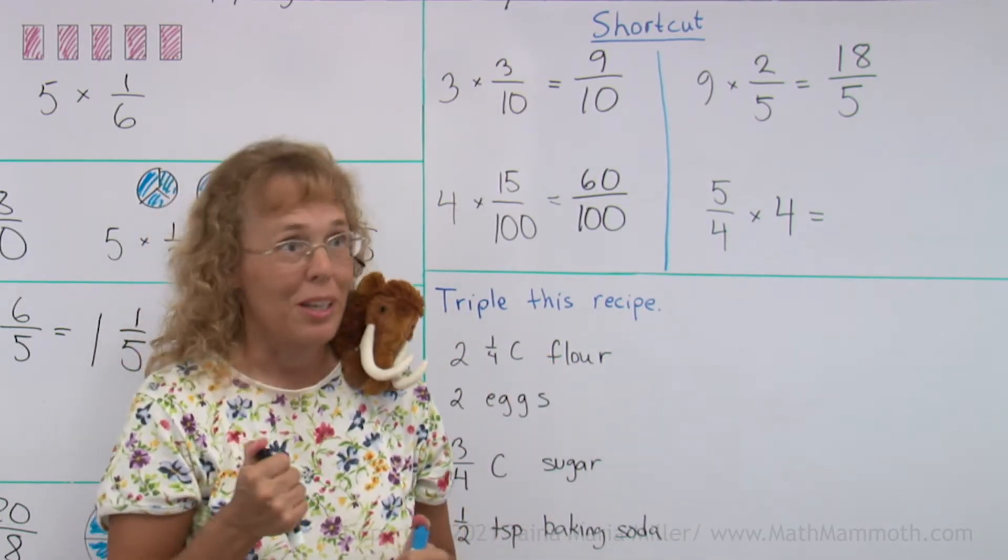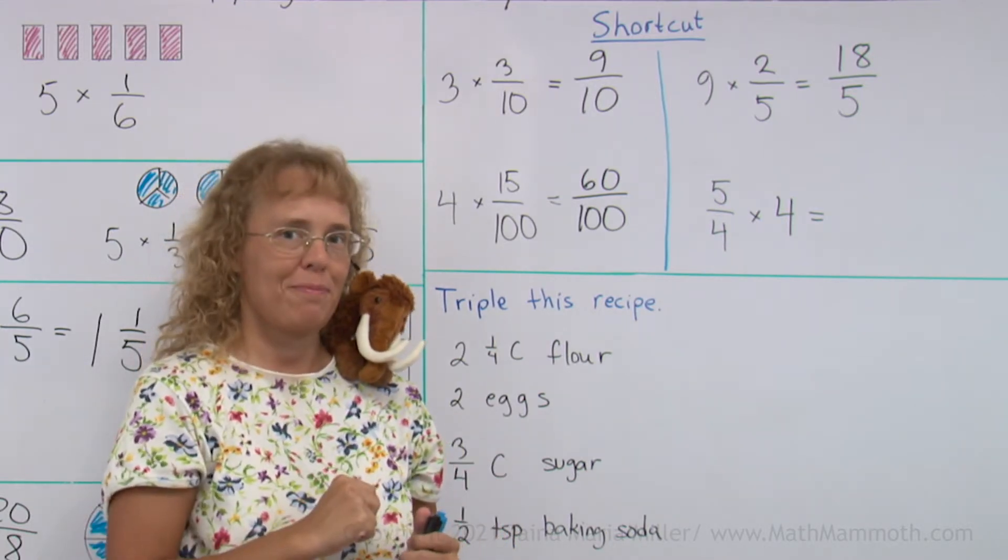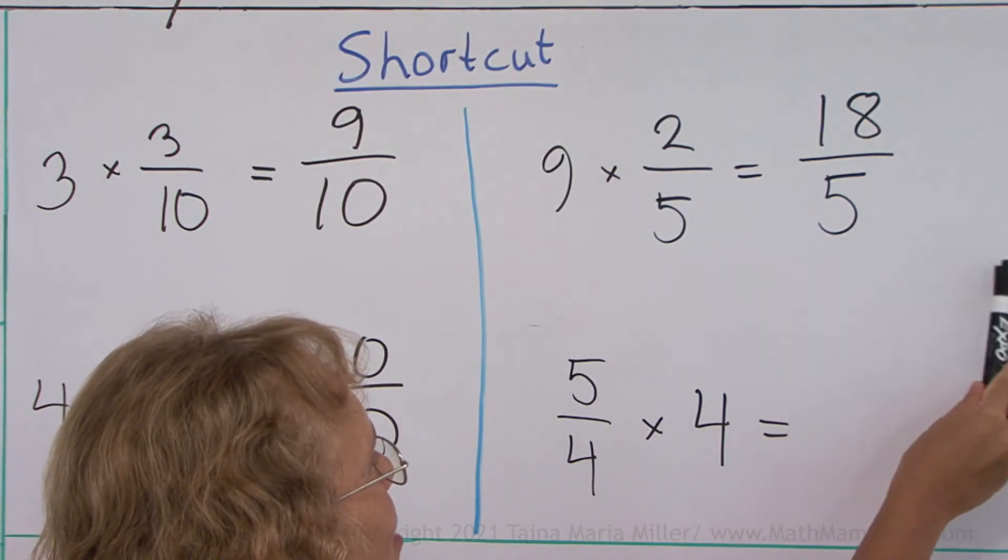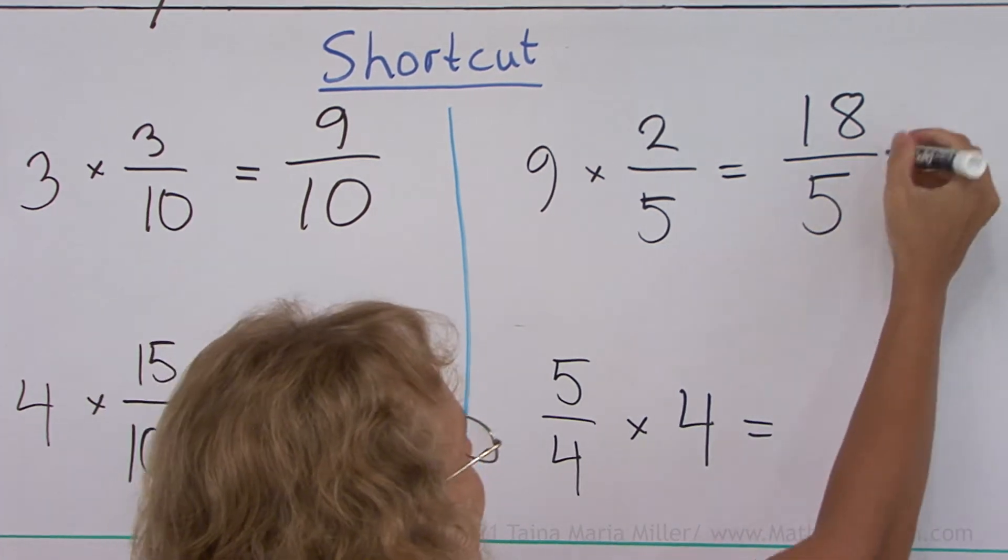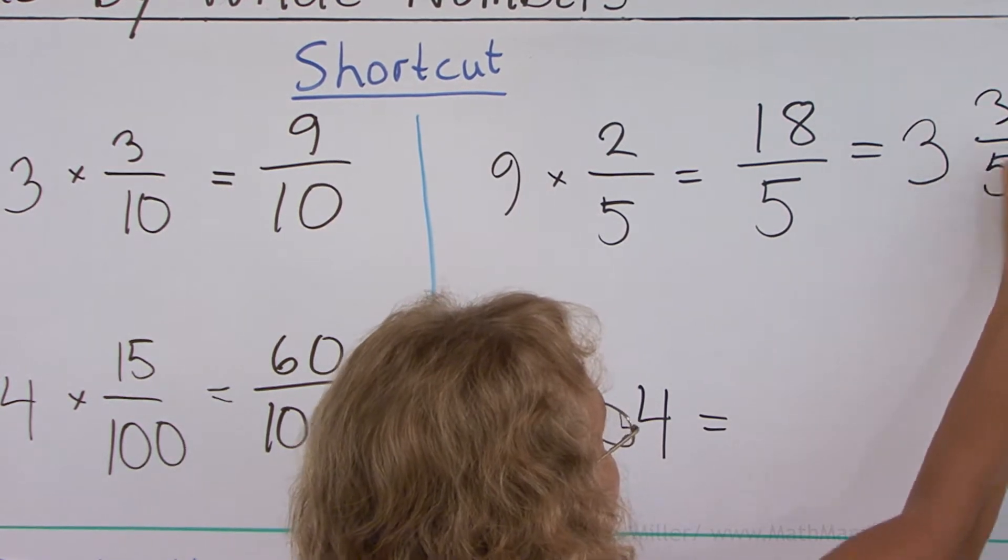Think this way. Each 5 fifths makes 1 whole pie. So 5 fifths, 5 fifths, 5 fifths, that would be 15 fifths. So we get 3 whole pies for those 15 fifths and then 3 fifths after that.